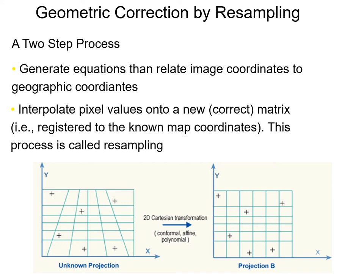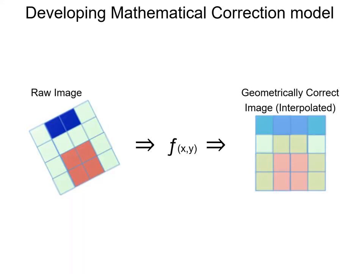Geometric correction is performed by resampling the image in a two-step process: we generate equations relating image coordinates to geographic coordinates, and then interpolate pixel values onto a new image matrix — this is called resampling. The input image starts distorted due to elevation effects and pointing effects, and the transformation produces the corrected image. As we'll see, it's generally not a one-to-one process; very often you're averaging a local area of pixels to get your new image.